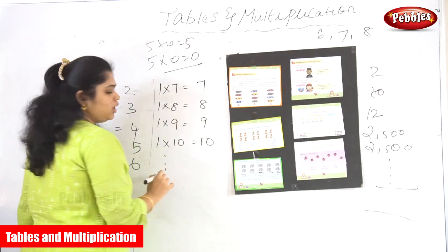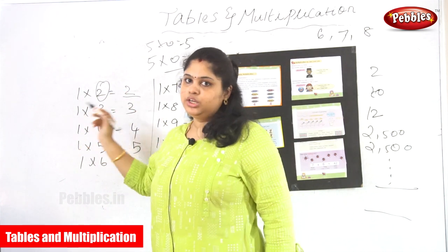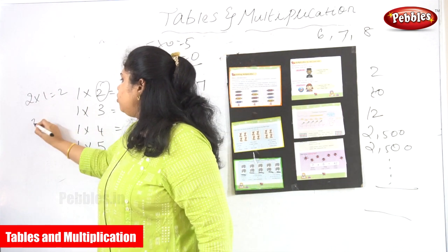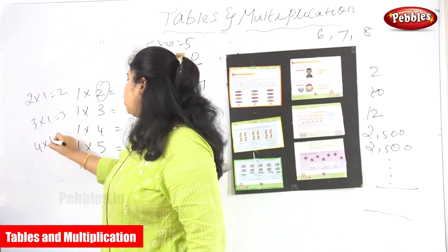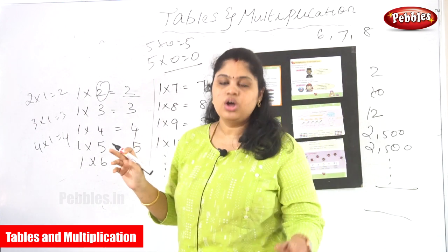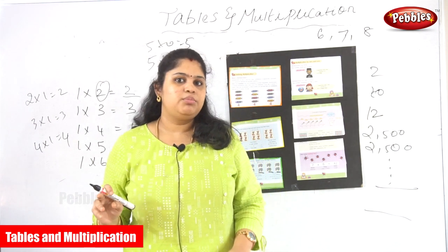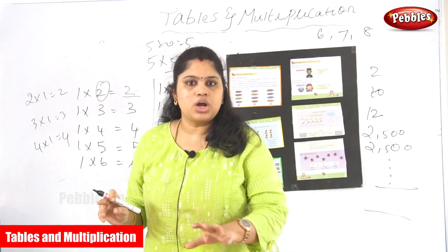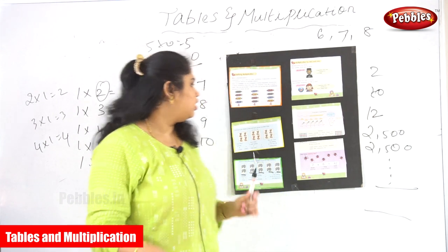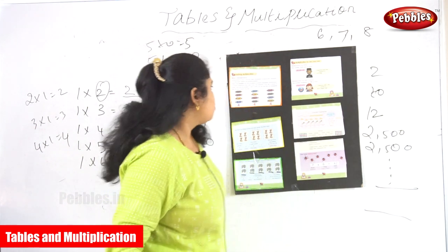Any number multiplied by 1 gives the same number as the answer. Vice versa: 2 into 1 is 2, 3 into 1 is 3, 4 into 1 is 4 — the same number. So to summarize: any number multiplied by 0 gives 0, and any number multiplied by 1 gives the same number. If you multiply 2 with 1 the answer is 2, and 1 with 2 the answer is also 2. Next: the concept of grouping.